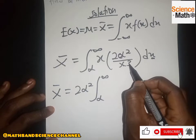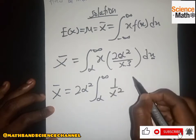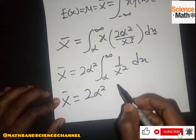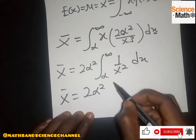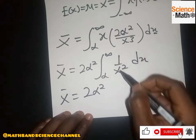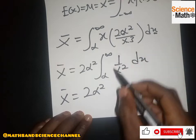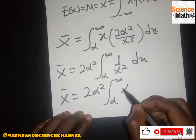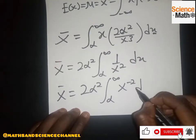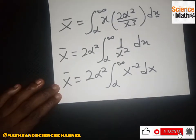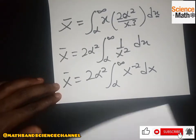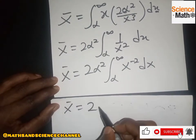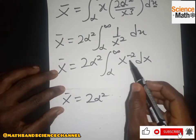We see that one x cancels with x³, leaving 1/x², or x to the power negative 2. So x-bar equals 2α² times the integral from α to infinity of x⁻² dx. We move x⁻² to the top and integrate.